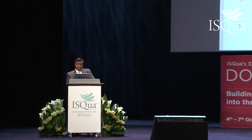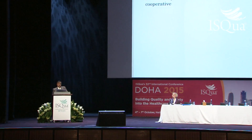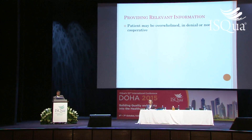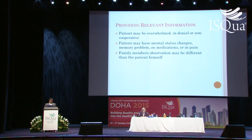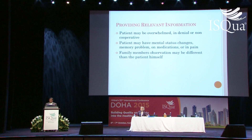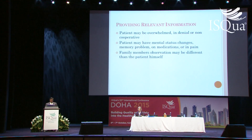Why do we need family involvement? Family provides relevant information to better understand the patient's condition. They contribute to decision-making and help the healthcare team care for the patient in the hospital and at home. This is also important to fulfill societal expectations. Patients may be overwhelmed, in denial, or non-cooperative, may have mental status changes, memory problems, or be on medication or in pain. The family member's observation may be totally different from the patient's, seeing it from a different angle from outside.